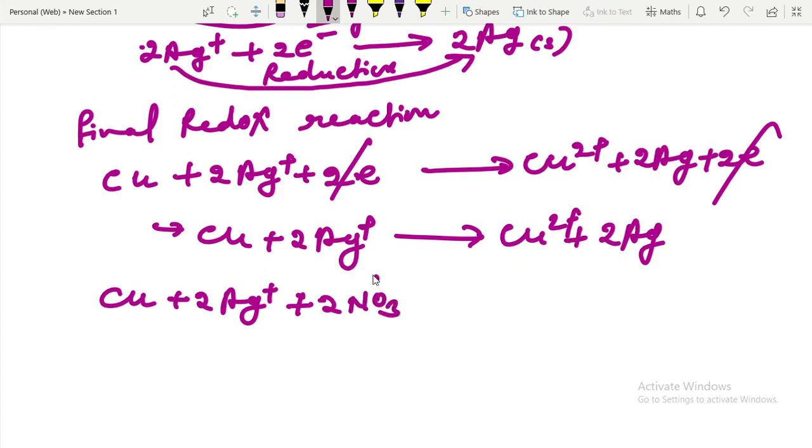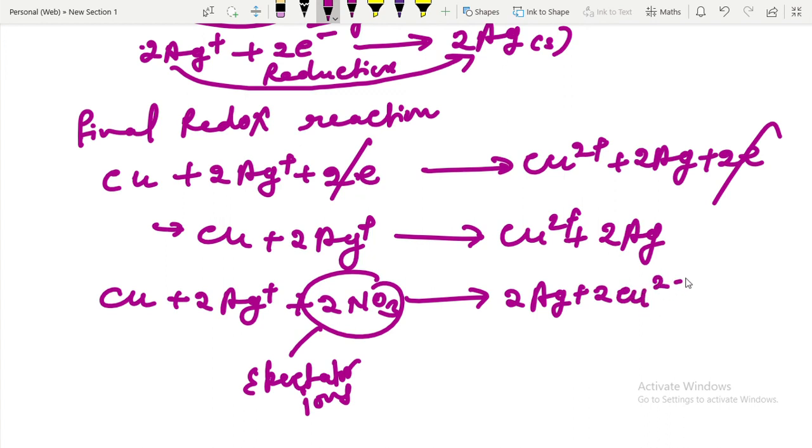These are spectator ions because they are not taking part in the equation. Spectator ions have no effect on the overall reaction. So thank you, hope it helped you a lot.